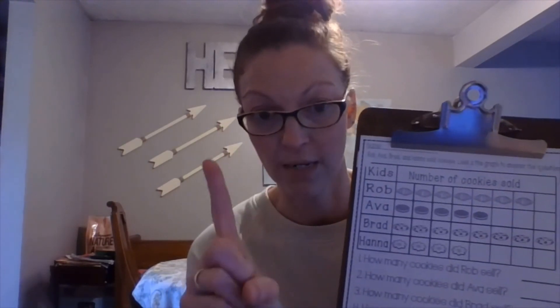This graph's title is 'Number of Cookies Sold.' These are all the kids that sold cookies: Rob, Ava, Brad, and Hannah. Now each pictograph shows pictures representing a number. For these, each cookie represents one. So when we're looking, we can see that Rob sold one, two, three, four, five, six, seven cookies.